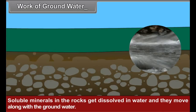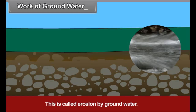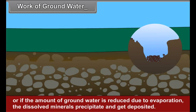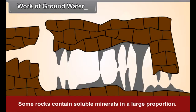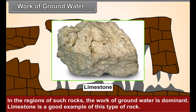Work of Groundwater: Soluble minerals in the rocks get dissolved in water and move along with the groundwater. This is called erosion by groundwater. If soluble minerals are supplied beyond the saturation level, or if the amount of groundwater is reduced due to evaporation, the dissolved minerals precipitate and get deposited. Some rocks contain soluble minerals in a large proportion, and in the regions of such rocks, the work of groundwater is dominant.